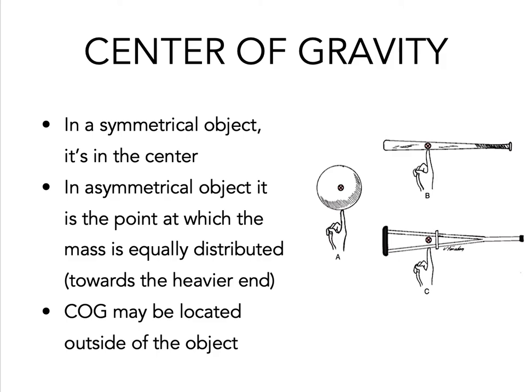The force of gravity on an object or a segment is considered to have its point of application at the center of mass, otherwise known as the center of gravity. Even when the center of mass lies outside of the object, it is still the point from which the force of gravity appears to act. In a symmetrical object it is in the center, as demonstrated by the sphere. In an asymmetrical object, it is at the point at which the mass is equally distributed.